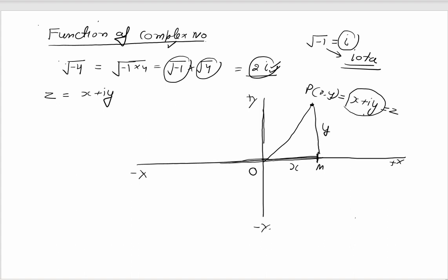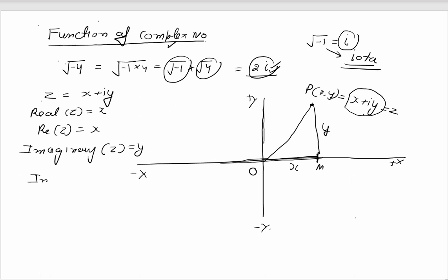We can take this as z. There will be two parts of a complex number: one part is the real part, written as Re(z) = x, and the other is the imaginary part, written as Im(z) = y. In totality, whenever you have a complex number, you represent it as z = x + iota y. Here z is a complex variable, and our topic is functions of complex variables.